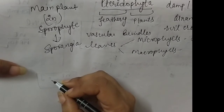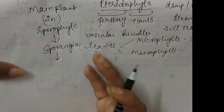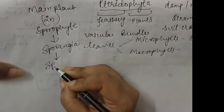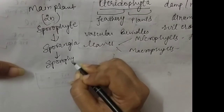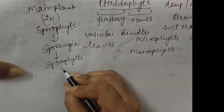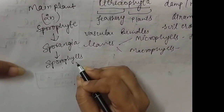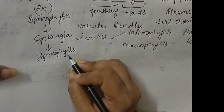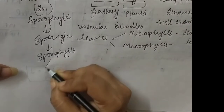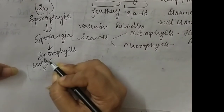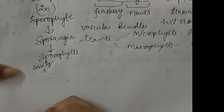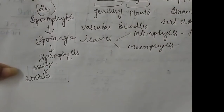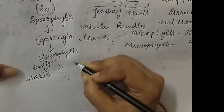The sporangia are covered by a cluster of leaves. These types of leaves which contain the sporangia are known as sporophylls — 'sporo' means sporangia and 'phylls' means leaves. So sporophylls are leaves inside which sporangia are present.